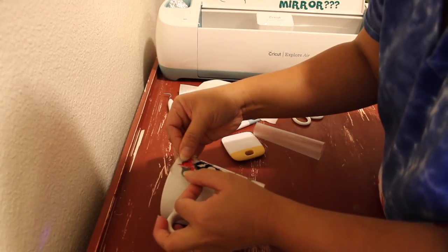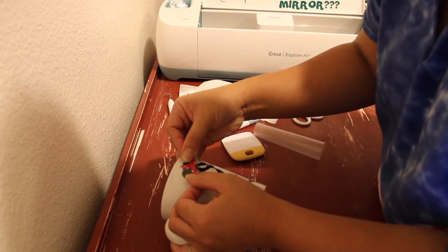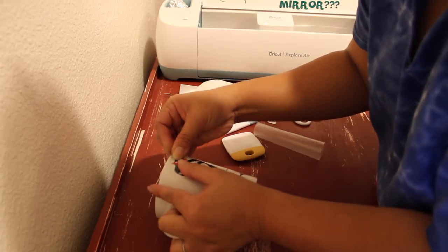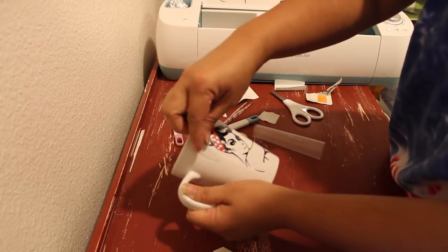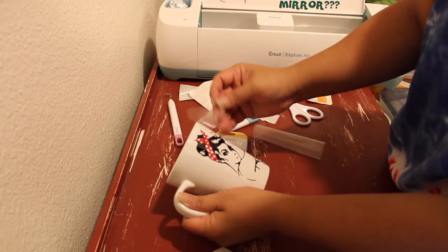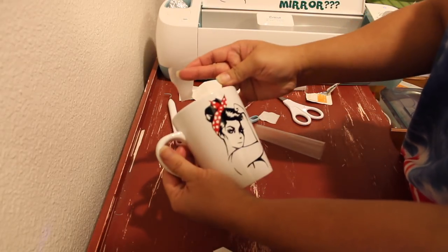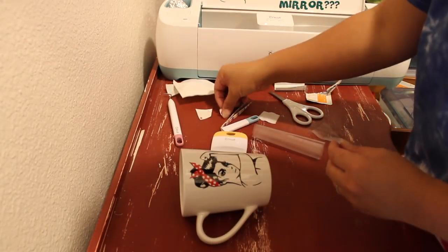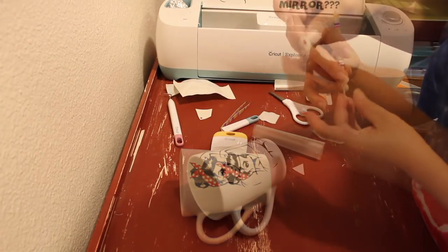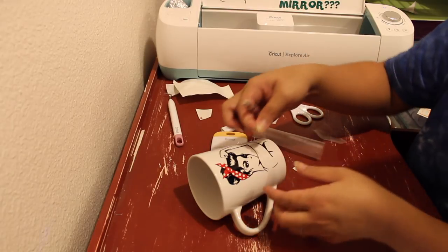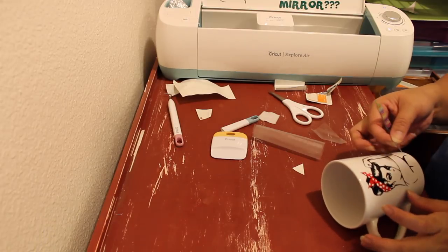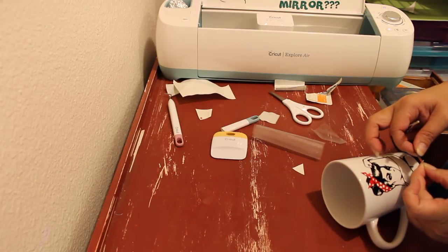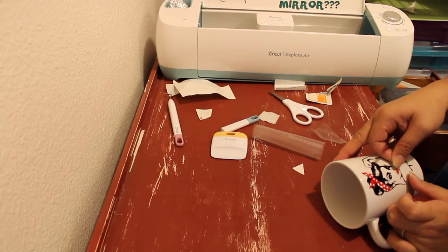Then just align it with the first layer. So you will notice on this part of the video that I had removed the black line of the lips. I needed the red lips to go first, then I'm placing the black line of the lips on top of the red vinyl.